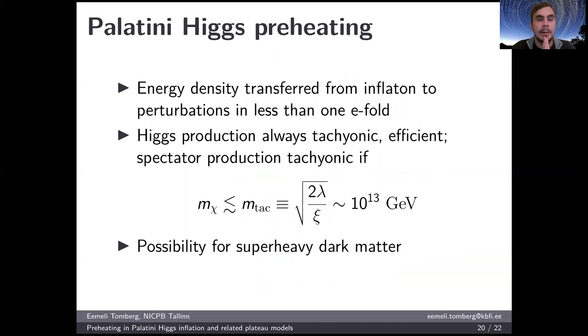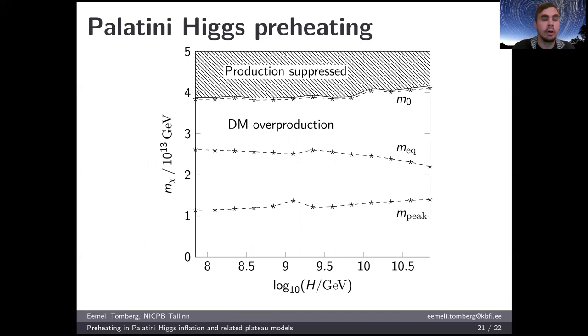To do a short recap: The energy density here is transferred from the inflaton field to the perturbations very quickly in much less than one e-fold. The Higgs production in particular is always tachyonic and efficient. The spectator field production is tachyonic if the spectator mass is not too large. By looking at the form of these ω terms which I showed earlier, one can derive an expression for this maximum mass, which still allows tachyonicity for the spectator. This turns out to be around 10¹³ GeV, which is still quite large, because it is larger than the value of the Hubble parameter in the Einstein frame in this model. So there's a possibility to produce superheavy dark matter if this χ field is stable.